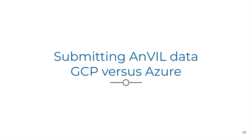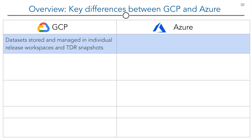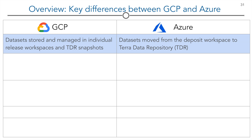The submission process on Azure is designed to be as similar as possible to the process on GCP. Here is a summary of the differences. In the GCP model, datasets are stored and managed in individual release workspaces and TDR snapshots. Users have primarily accessed the datasets through workspaces. In Azure, the datasets will be stored only as snapshots in TDR. Individuals will use the data explorer to search across the snapshots and can then export the data to their workspaces for analysis.